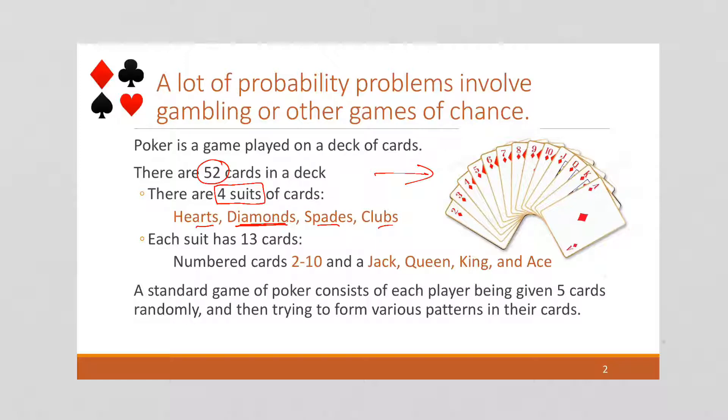Each suit has 13 cards. We number between 2 to 10, and then we have Jack, Queen, King, and Ace. So 13 cards. And if you have 13 times the four suits, then you're going to get 52 cards total.